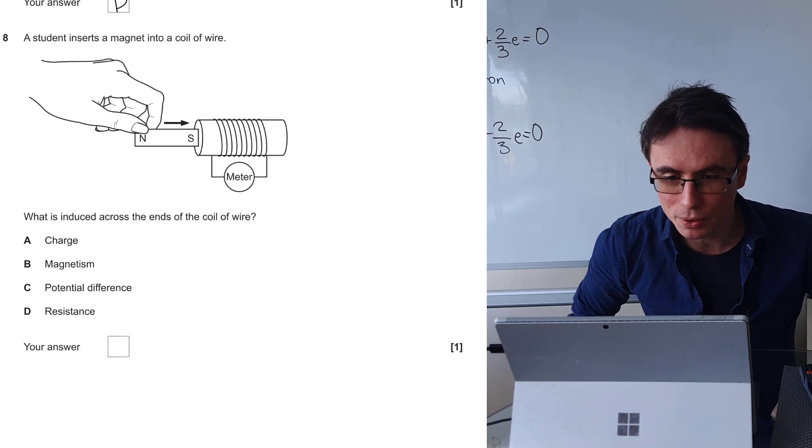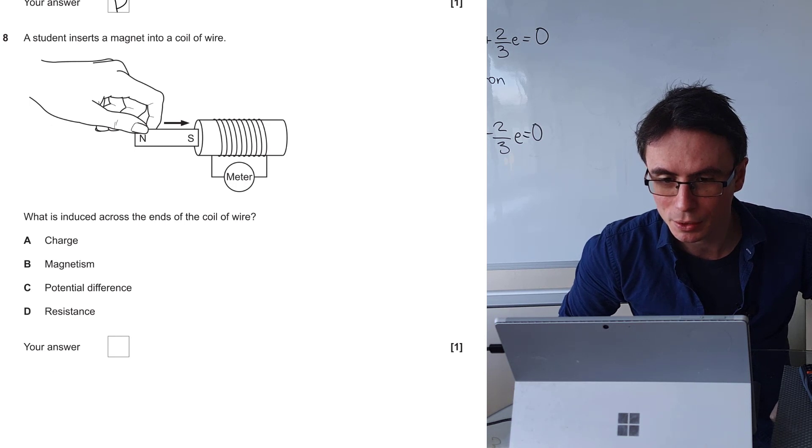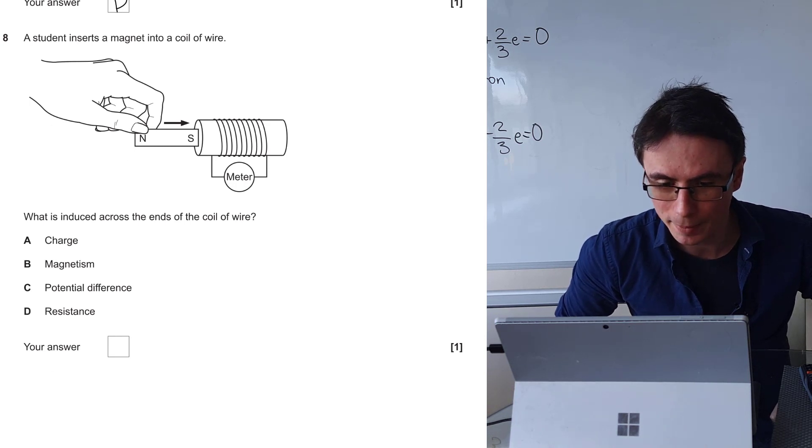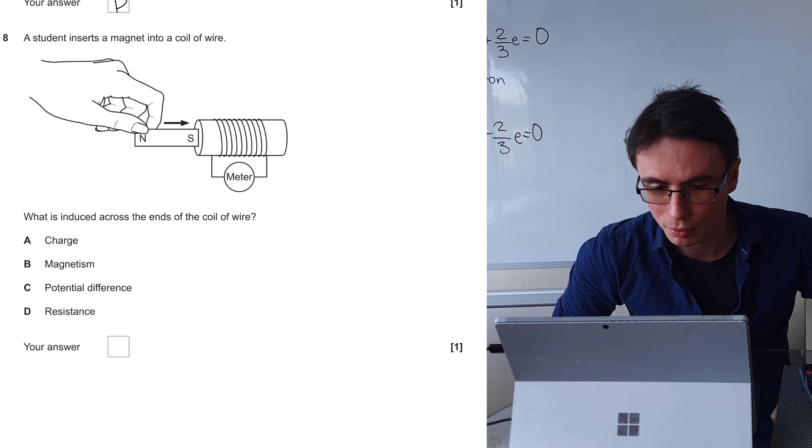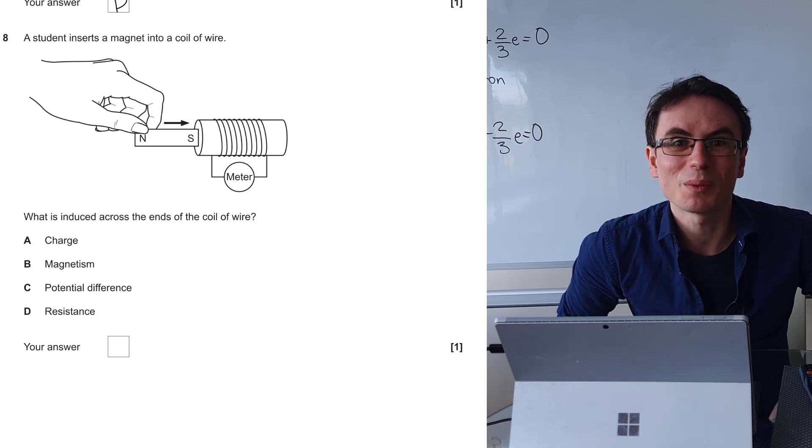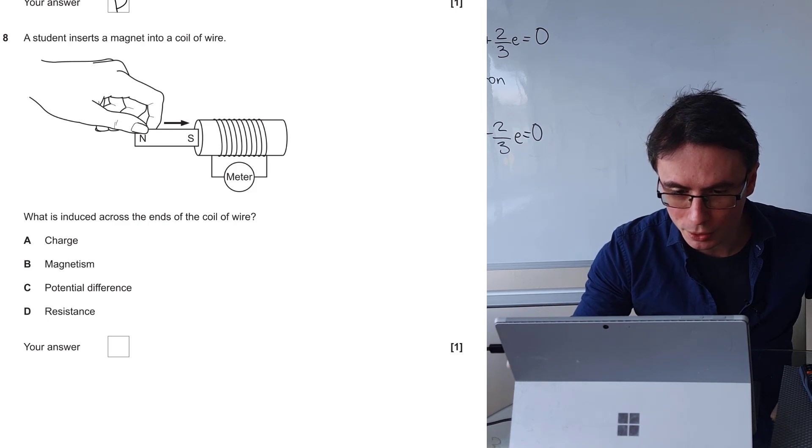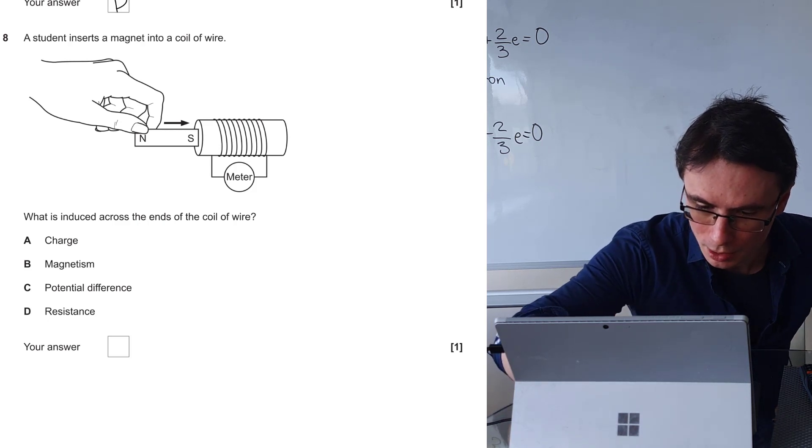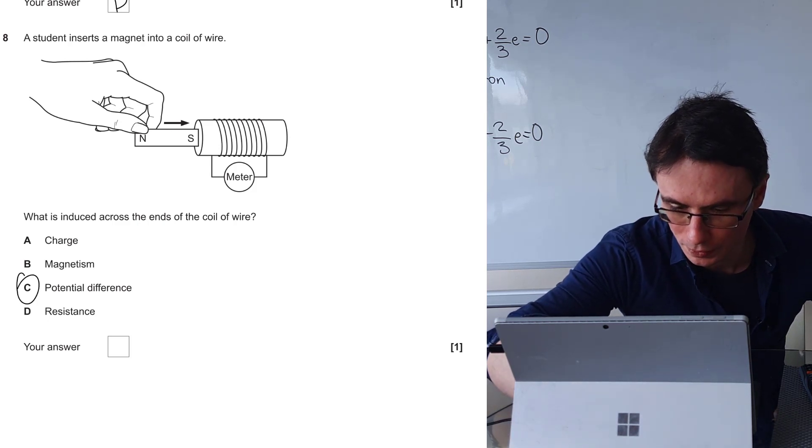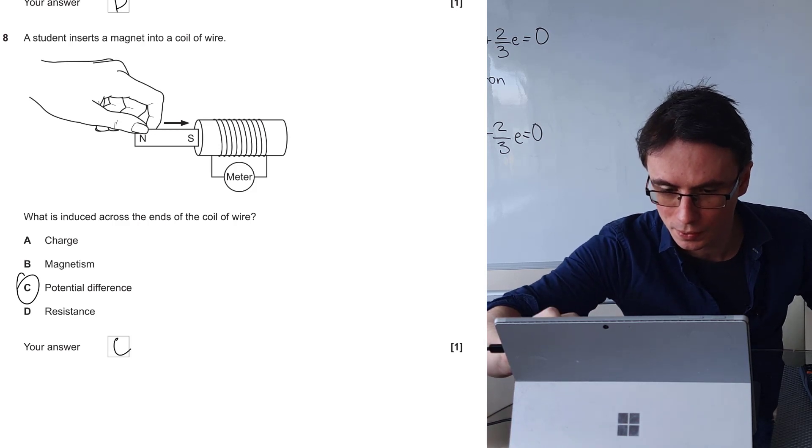Question 8. A student inserts a magnet into a coil of wire. What is induced across the ends of the coil of wire? There's going to be some induced EMF if you're moving this. Induced EMF will be potential difference. The correct answer is C.